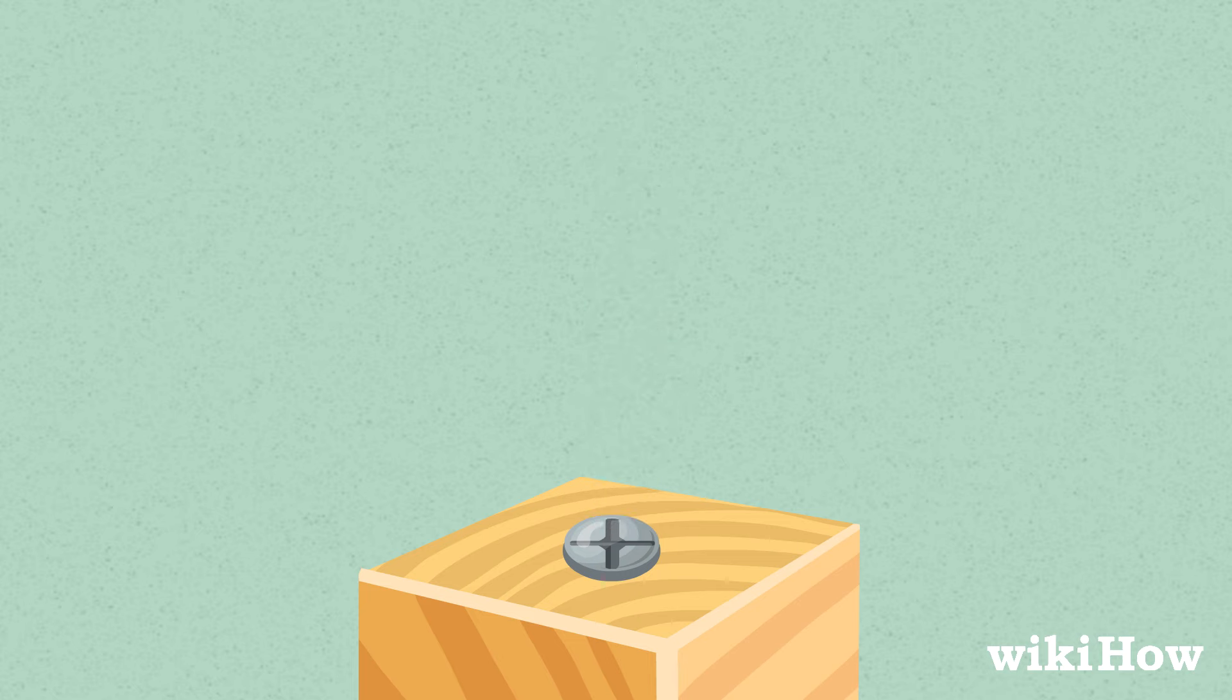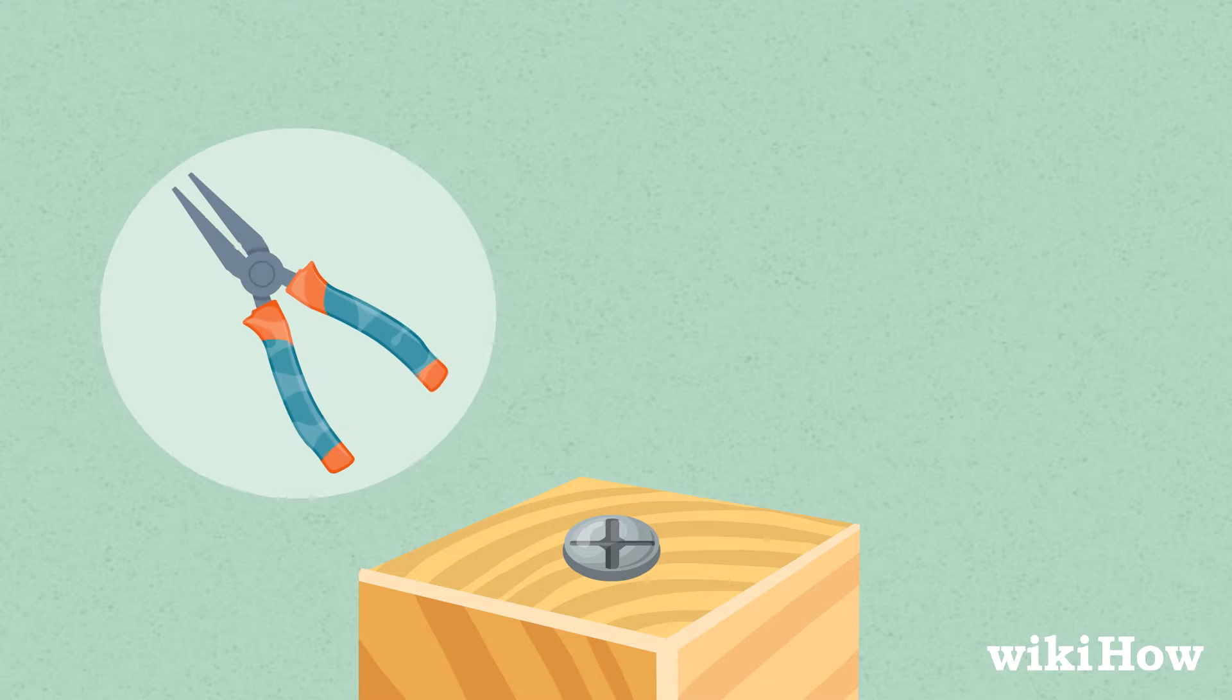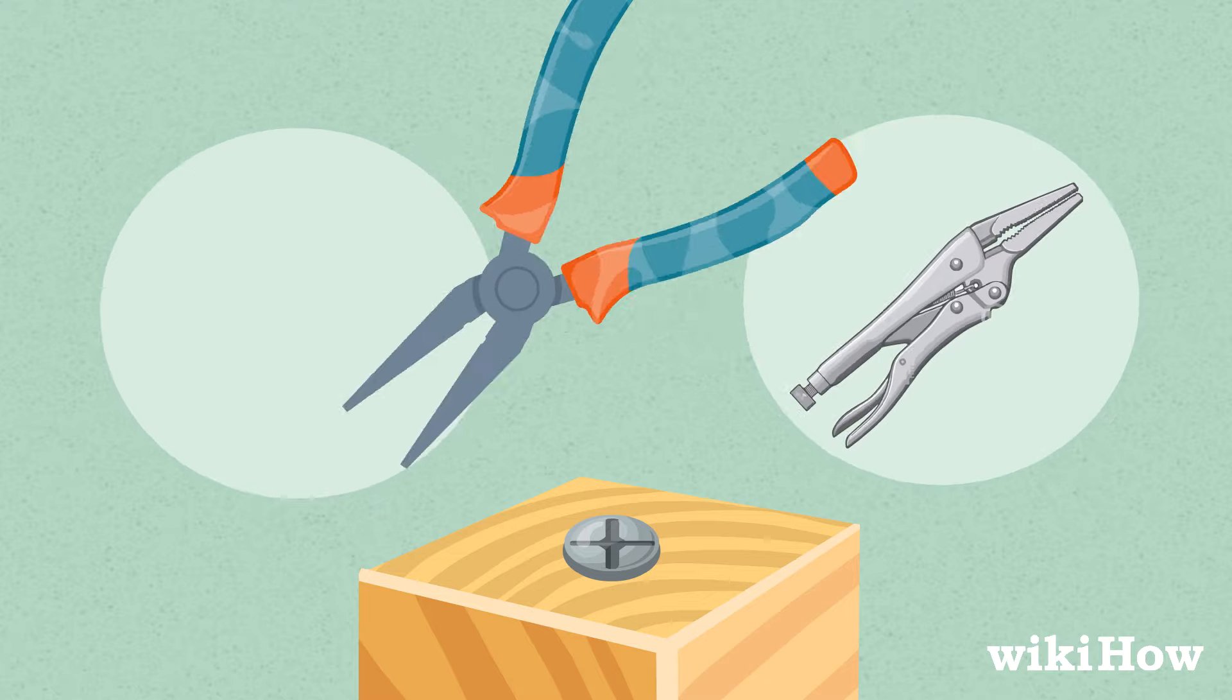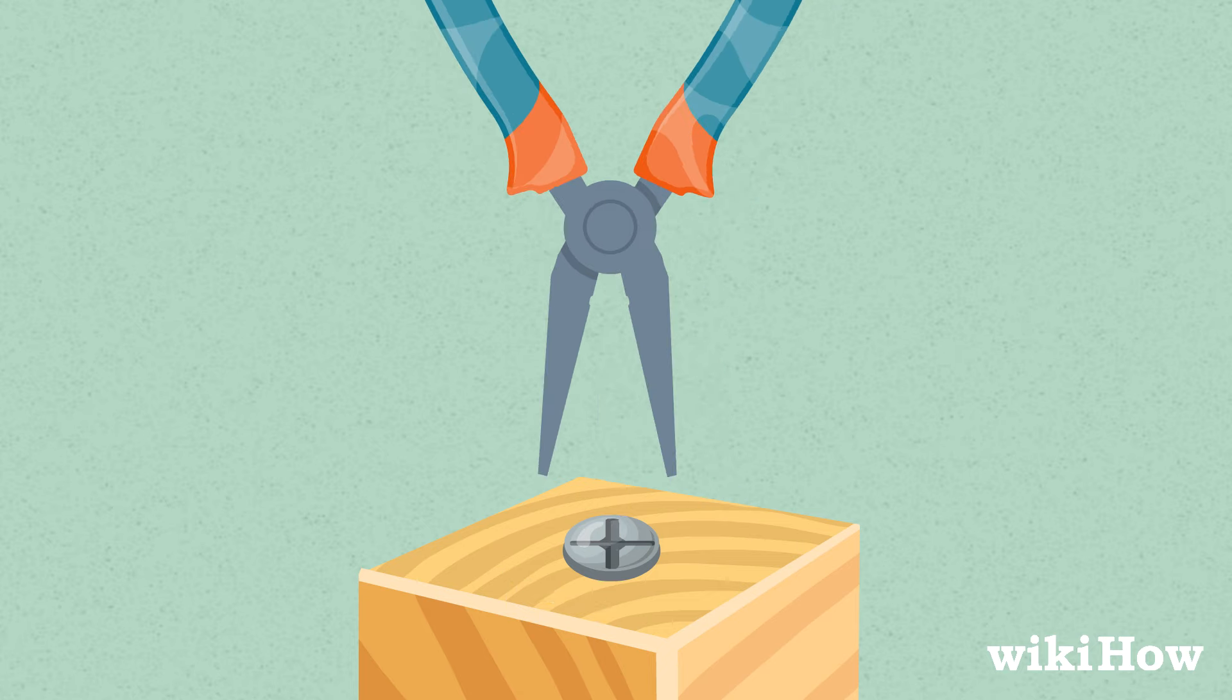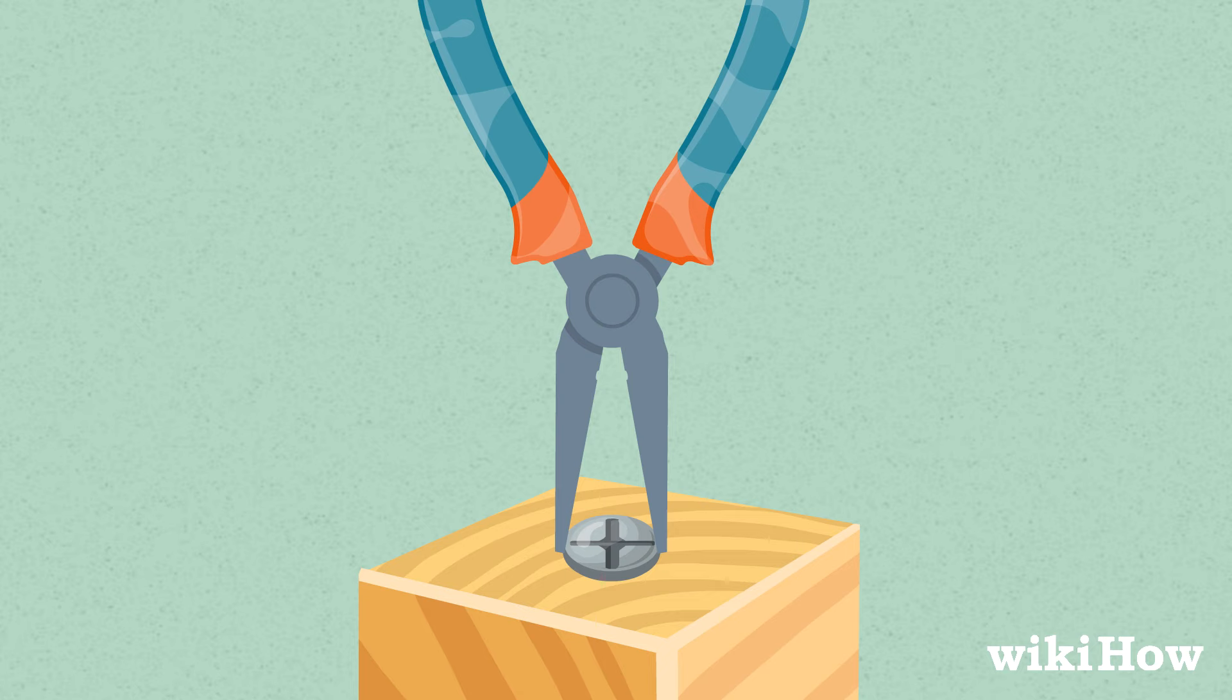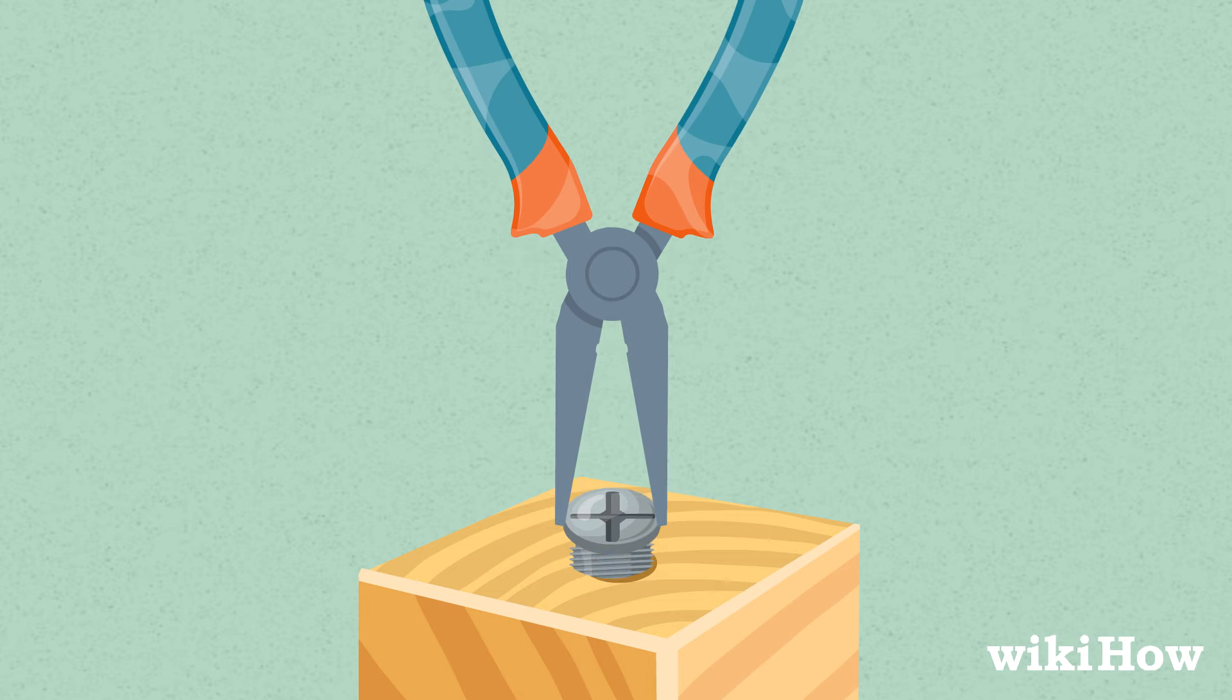If you don't have anything that can fit in the grooves on the screw, grip the top of the screw with a pair of pliers or vice grips, then turn it counterclockwise until it's loose. This technique will only work if the top of the screw sticks up enough so you can get a good grip on it.